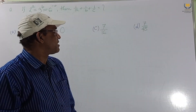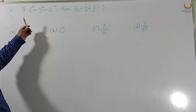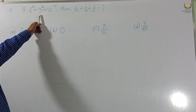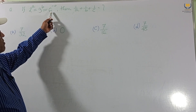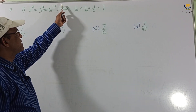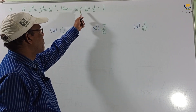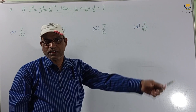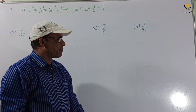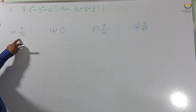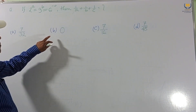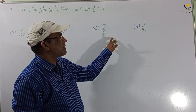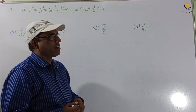Consider this problem: if 2^a = 3^b = 6^(−c), then what is 1/a + 1/b + 1/c equal to? The options given are 7/32, 0, 7/16, and 7/48.